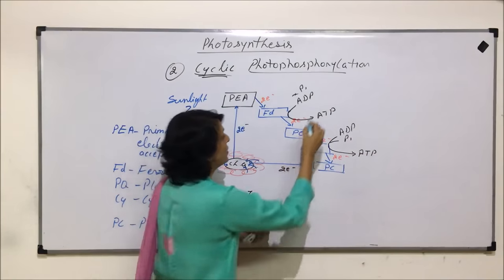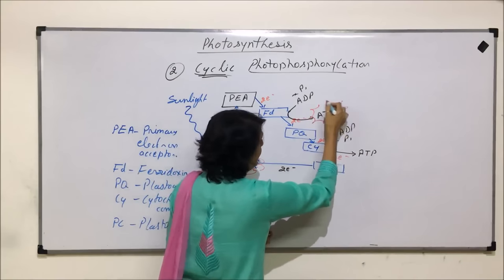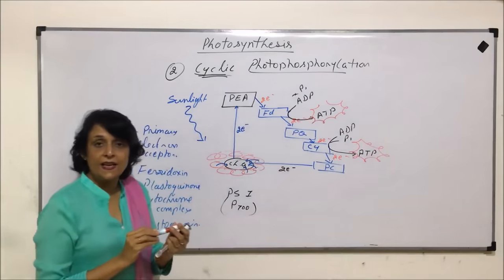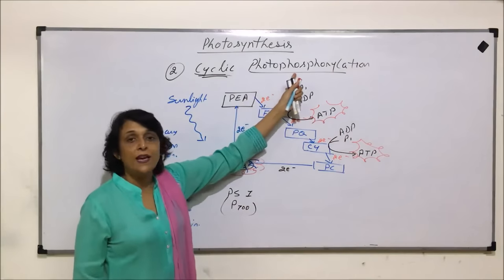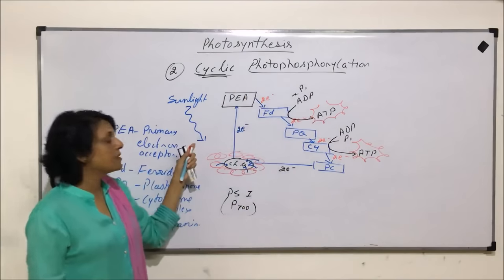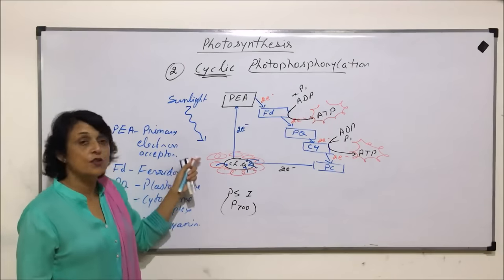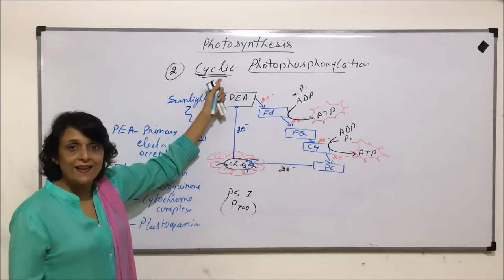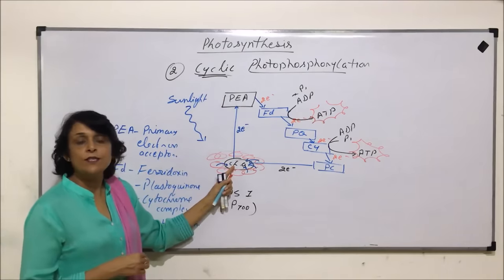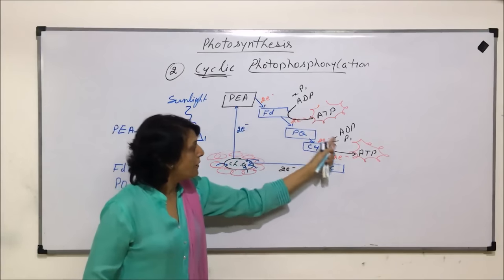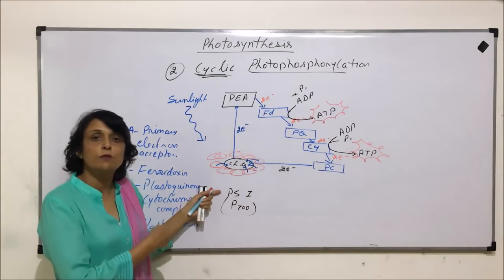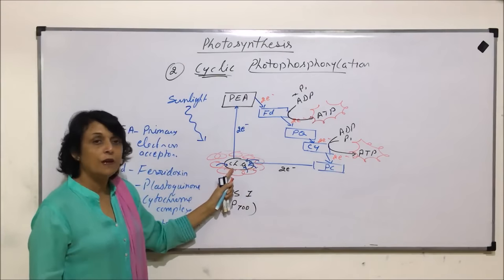So, phosphorylation is for synthesis of ATP, addition of phosphate. Photo, because it is taking place in presence of sunlight. And cyclic, because the electron pair which leaves chlorophyll A, after passing through this electron transport chain, it is the same electron which is coming back to chlorophyll A.